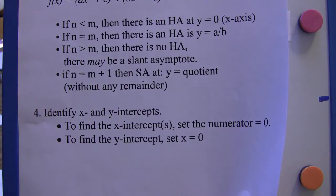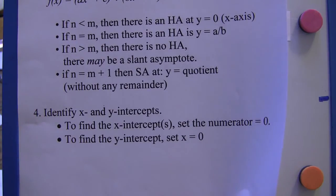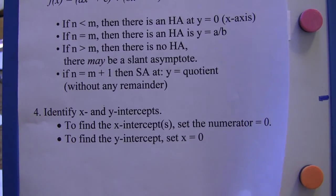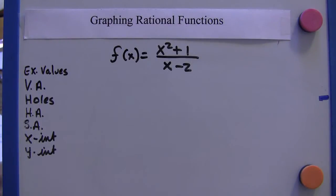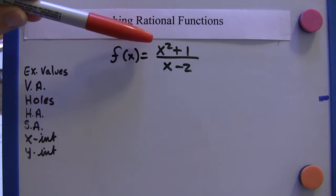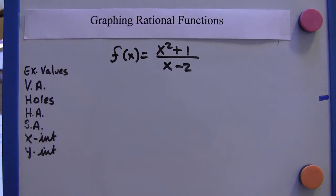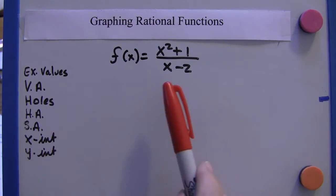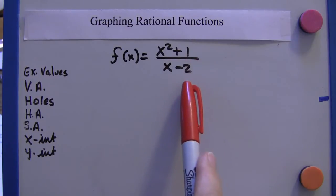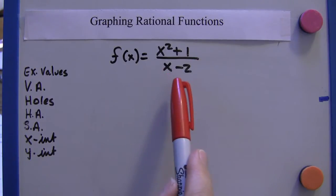You can certainly do this in any order that you want. This is just an order I've found that works well for me. So, here's a function: x squared plus one over x minus two. There's no way we can reduce this or simplify this, so that's taken care of.